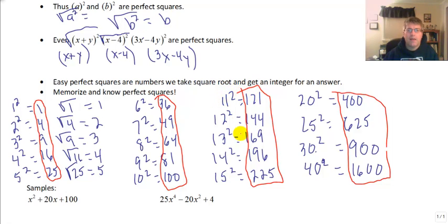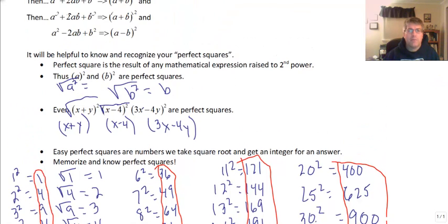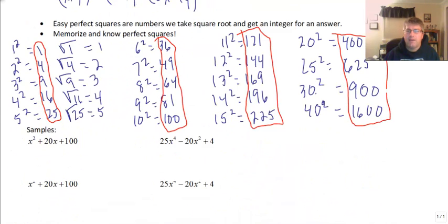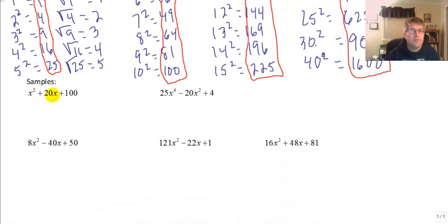Your perfect squares are the numbers circled in red, and you'll need to be able to take the square root of those numbers — for example, the square root of 121 is 11, and the square root of 196 is 14. Going back to our patterns: the square root of a squared is a, the square root of b squared is b, and we need the 2ab middle term, giving us a plus b quantity squared. Let's do some sample problems.